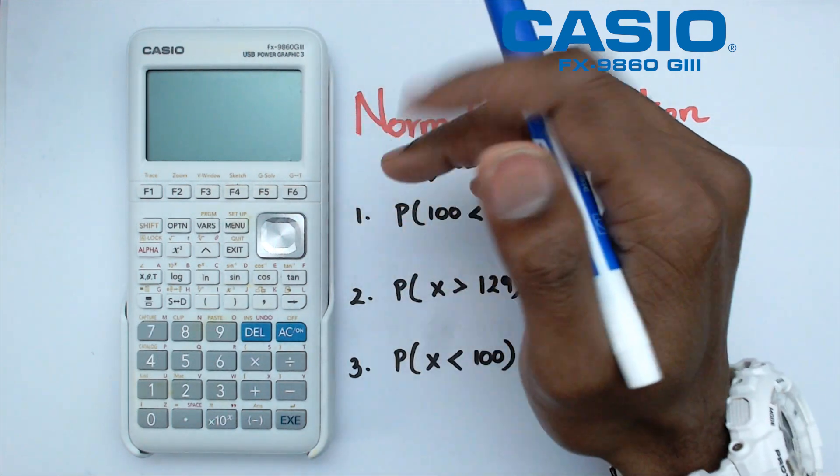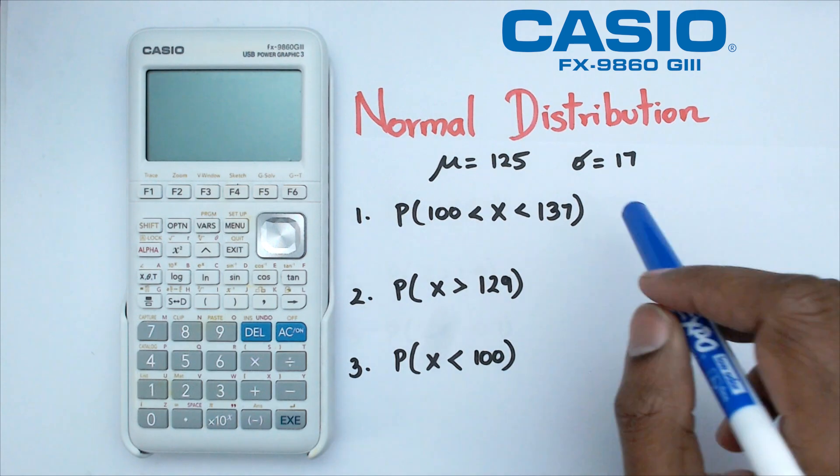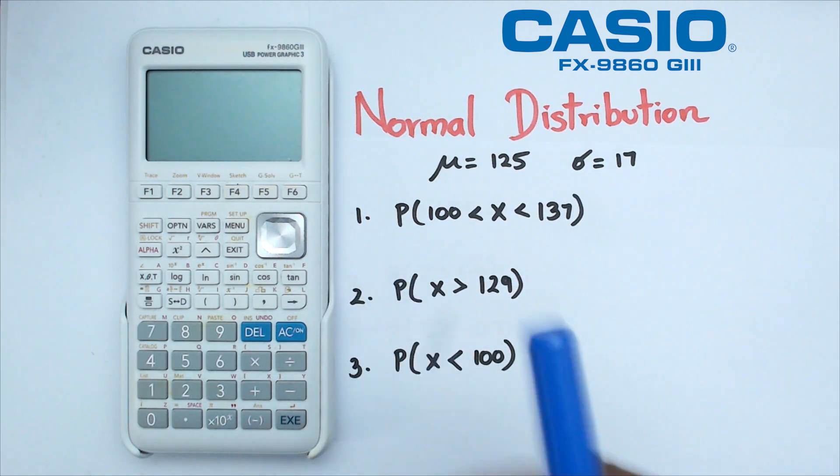Hey folks, welcome to another how-to Casio video. In this video, we're going to be looking at how to do normal distribution with a different mean and standard deviation, not the regular Z one, on this particular Casio graphics calculator. So, without further ado, let's get started.